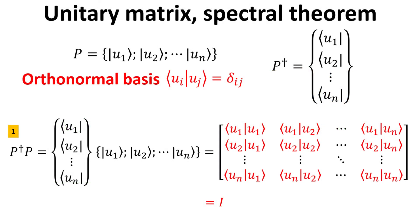It is straightforward to prove that the matrix P is unitary. The matrix form for the adjoint of P is constructed by concatenating the bra row vectors. The product of P dagger with P can then be evaluated, where the matrix is explicitly written in equation 1, with the ij element given by the inner product of ket i with ket j. Due to the orthonormality of the ket basis set, the matrix works out to be the identity matrix, thus proving that matrix P is indeed unitary.